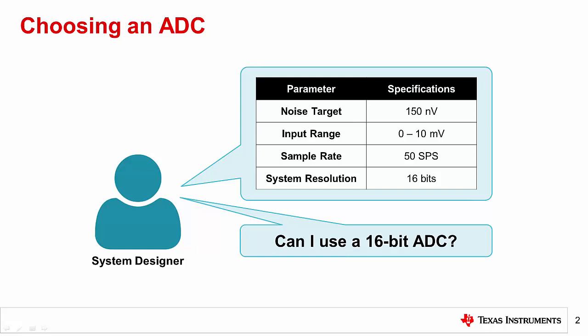One common system design challenge is correlating your requirements to the information found in an ADC's datasheet. To mitigate this challenge, it's important to understand how ADC manufacturers measure and specify ADC noise, as well as know the different ADC noise parameters and their derivations. This knowledge will equip you to confidently read an ADC's datasheet, compare this information to your system's specifications, and confirm it is the right device for your design.